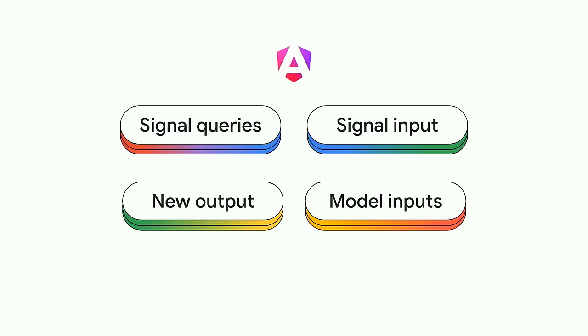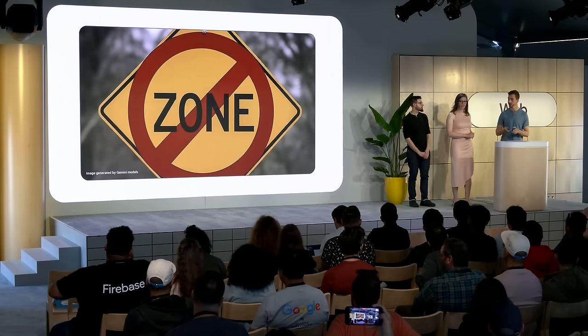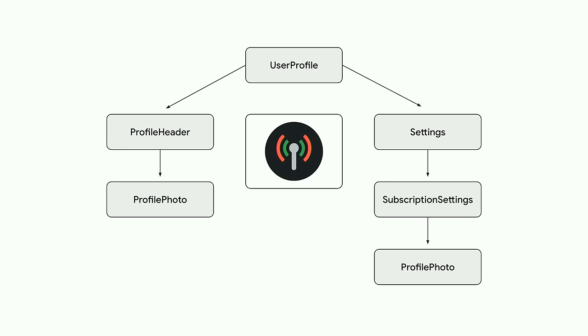We really think that these new APIs are going to improve your experience authoring Angular components and directives. They are all available right now in developer preview — the most recent, the output API, was released in Angular 17.3. These APIs seem great, but if I start using them right now, is my application going to be completely zoneless? We still have some improvements we want to make before recommending that people go fully zoneless. There's still some work needed around how the framework schedules tasks and how you interact with change detection in tests, but we're making progress towards fully driving UI updates from signals. We may have some announcements in a couple of days.